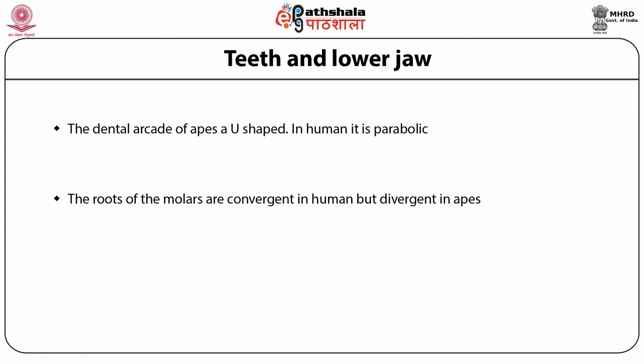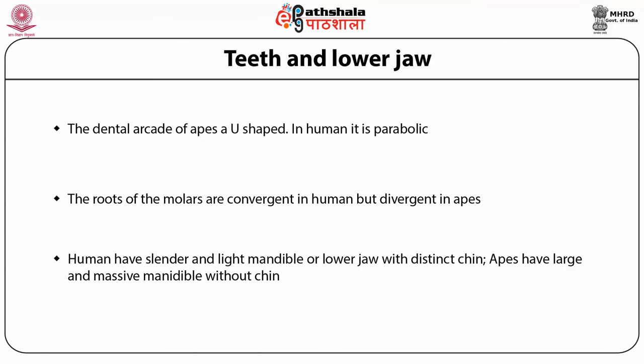Now let's discuss about the lower jaw. Humans have a slender and light mandible with a distinct chin, while apes have a large and massive mandible without a chin. The sigmoid notch is deep and narrow in humans, with a narrow and high ascending ramus. Apes have a shallow and broad sigmoid notch with a broad, short, and large ascending ramus. In humans, the genial tubercle is present and the simian shelf is absent, while in apes the genial tubercle is absent and the simian shelf is present.